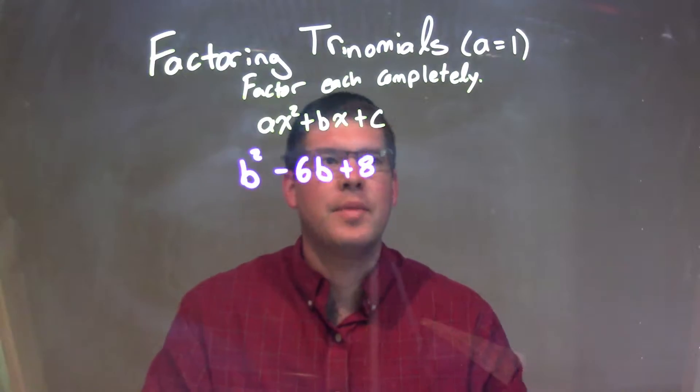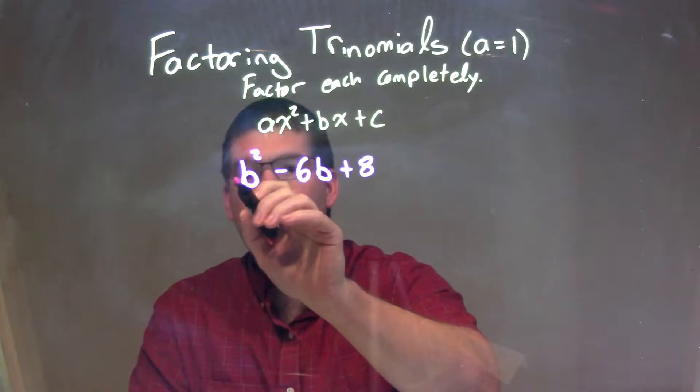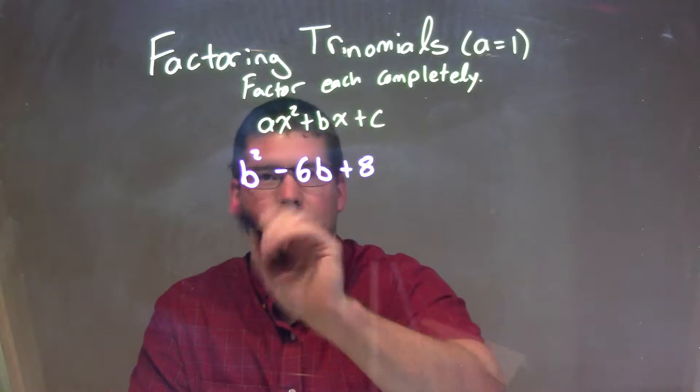All right, so our variable's b here, and we have an a value, that's one. That's the number or the coefficient right in front of our variable squared.